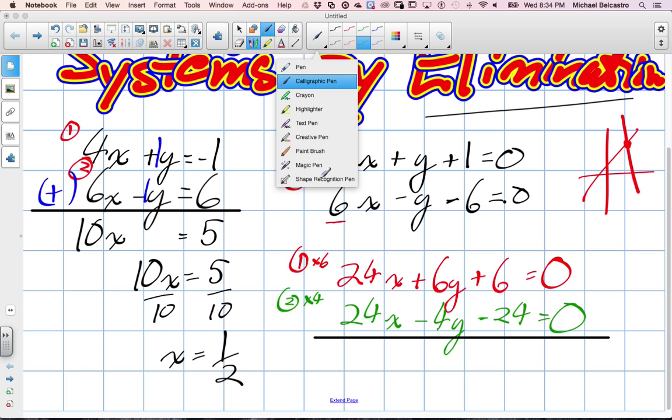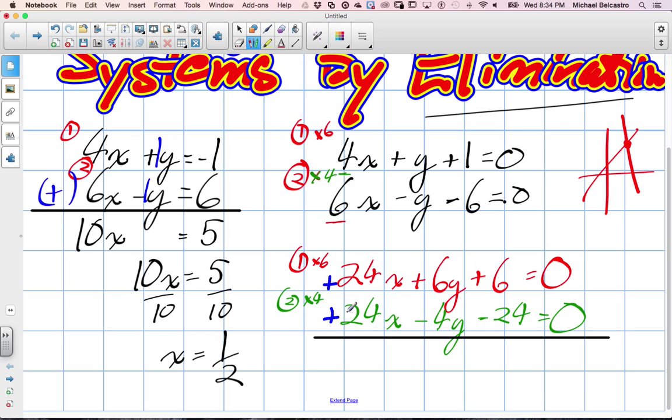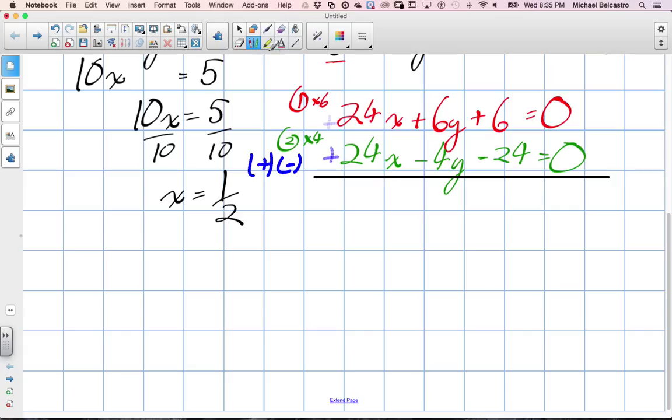So again, we set this up like elementary addition and subtraction. This time, though, the two coefficients are both positive. So we need to either add or subtract. Which of these operations do you think we need to do here to eliminate these? Subtract. Yeah, we need to subtract.